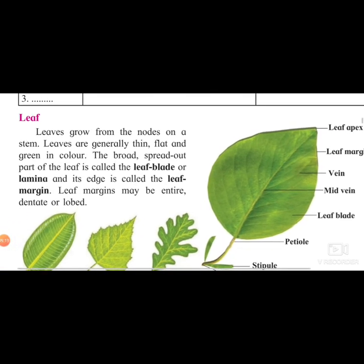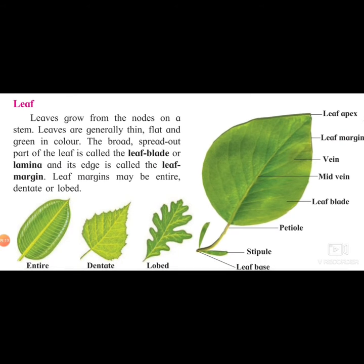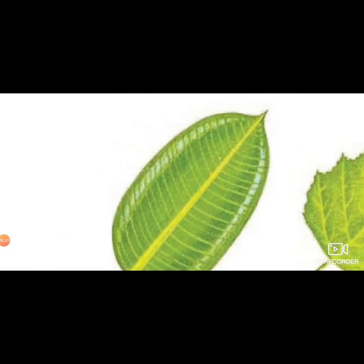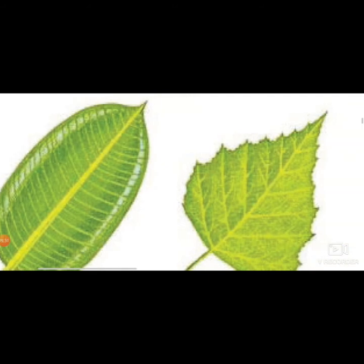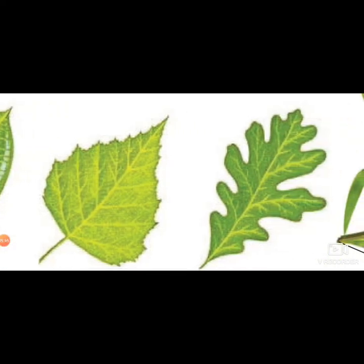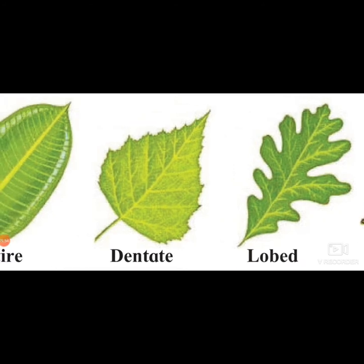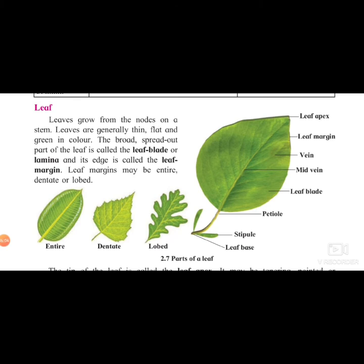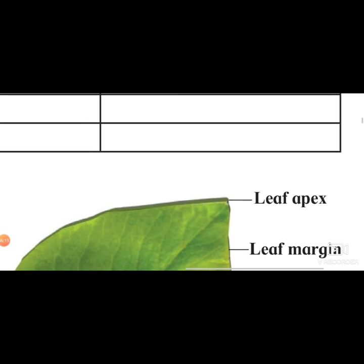Leaf margins may be entire, dentated, or lobed. Entire means the margin is complete with no gap. Dentated means there are small breaks, like little up-and-down notches like mountains. Lobed means there is a huge gap, going up and down prominently. The topmost part of the leaf is called the leaf apex - apex means the very tip of the leaf.